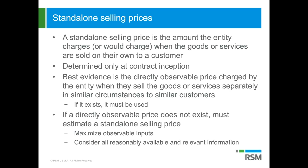Under 605, you start with vendor-specific objective evidence, or VSOE, of selling price, and if you have that, you have to use it. If you don't have it, then you use third-party evidence of selling price — what is a competitor selling a substantially similar product or service for? Again, if you have third-party evidence, you've got to use that. But if you don't have either VSOE or third-party evidence, then you use the best estimate of selling price.